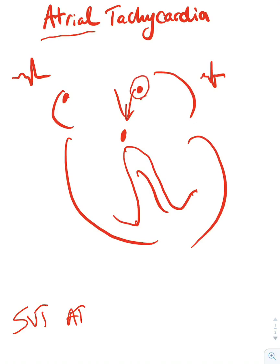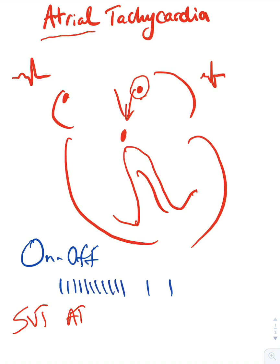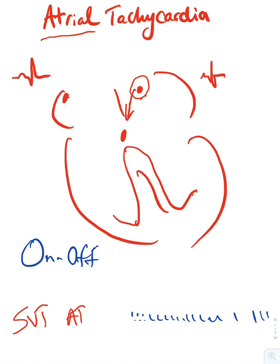Another thing to remember about atrial tachycardia: some physicians call it 'on and off.' Basically, this rhythm has a sudden onset, and then all of a sudden it stops and the patient might go back to normal sinus rhythm, then have another bout again, and then it stops. This is what they call the on-off phenomenon — a sudden start and sudden ending of the tachycardia.